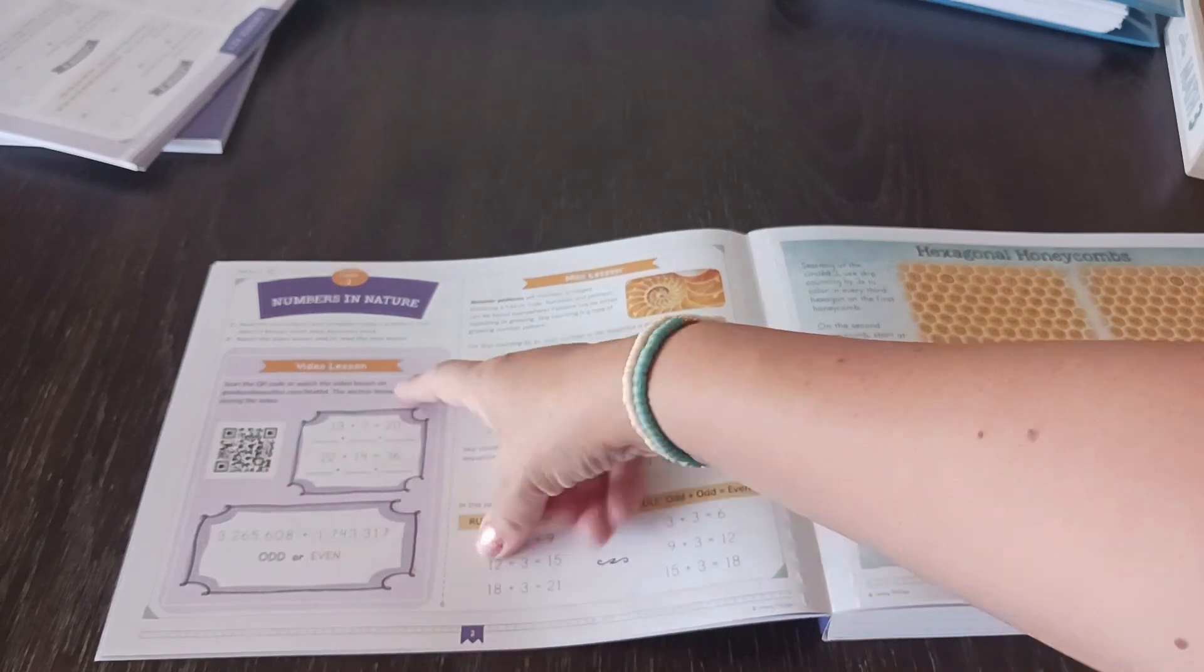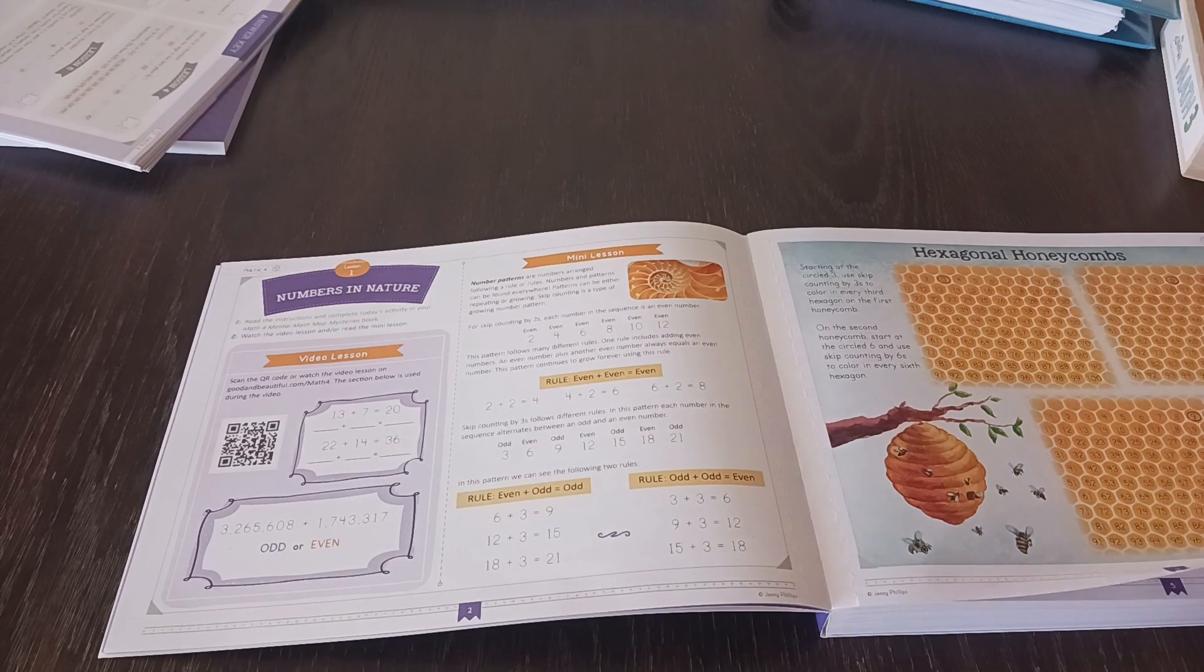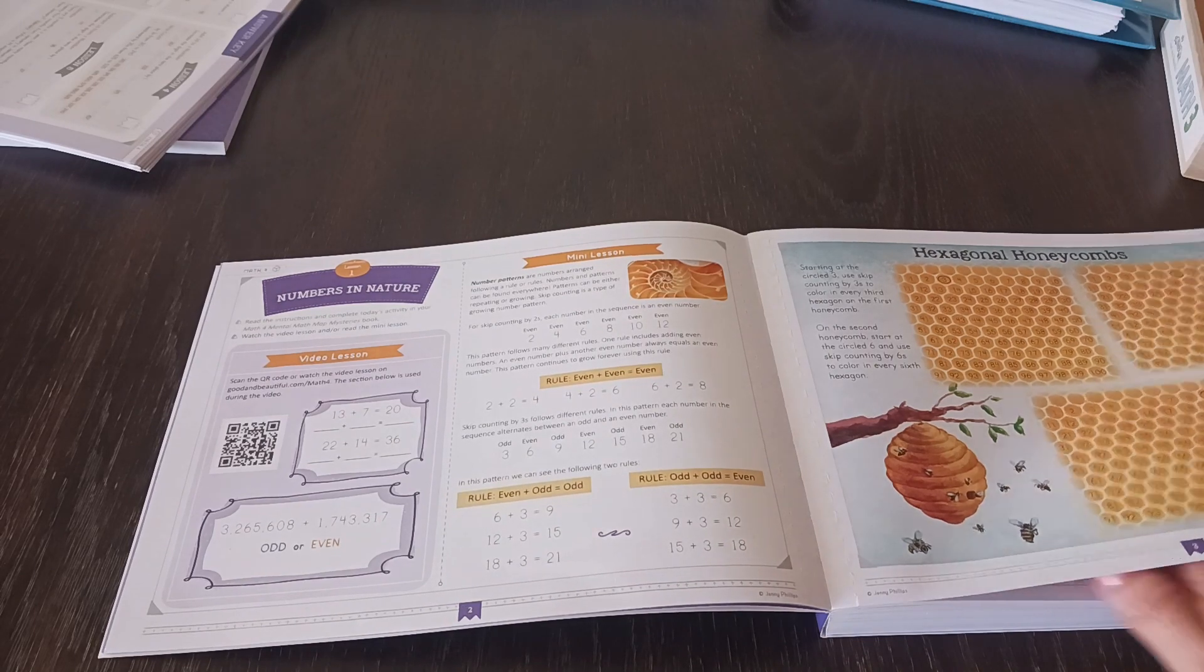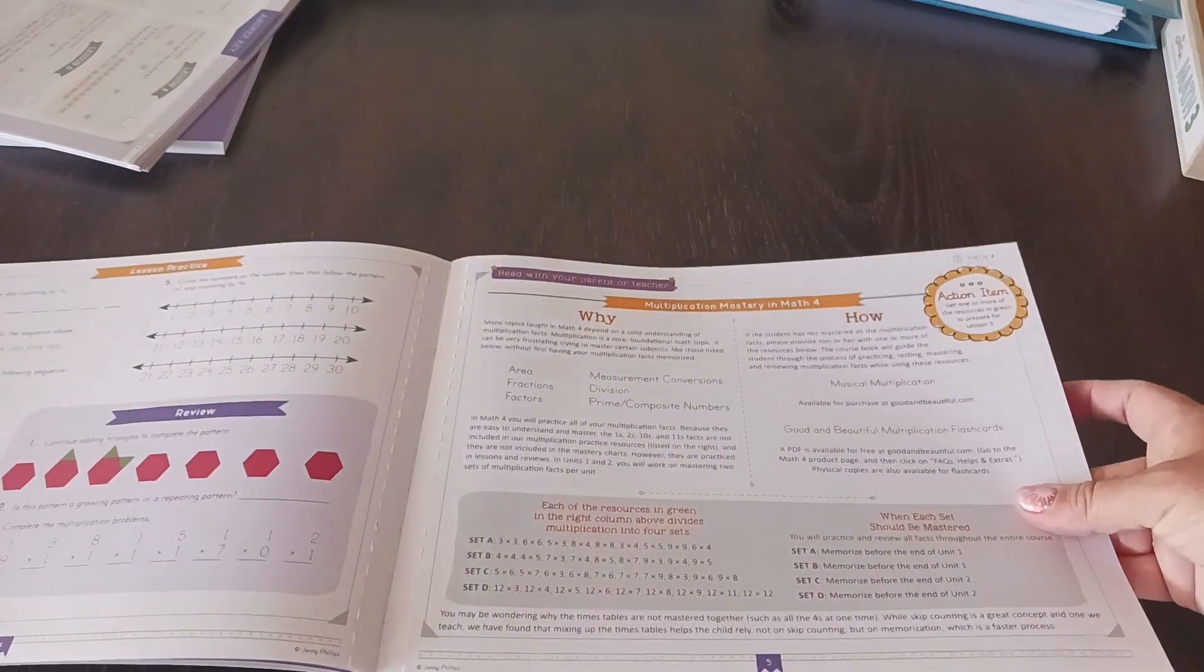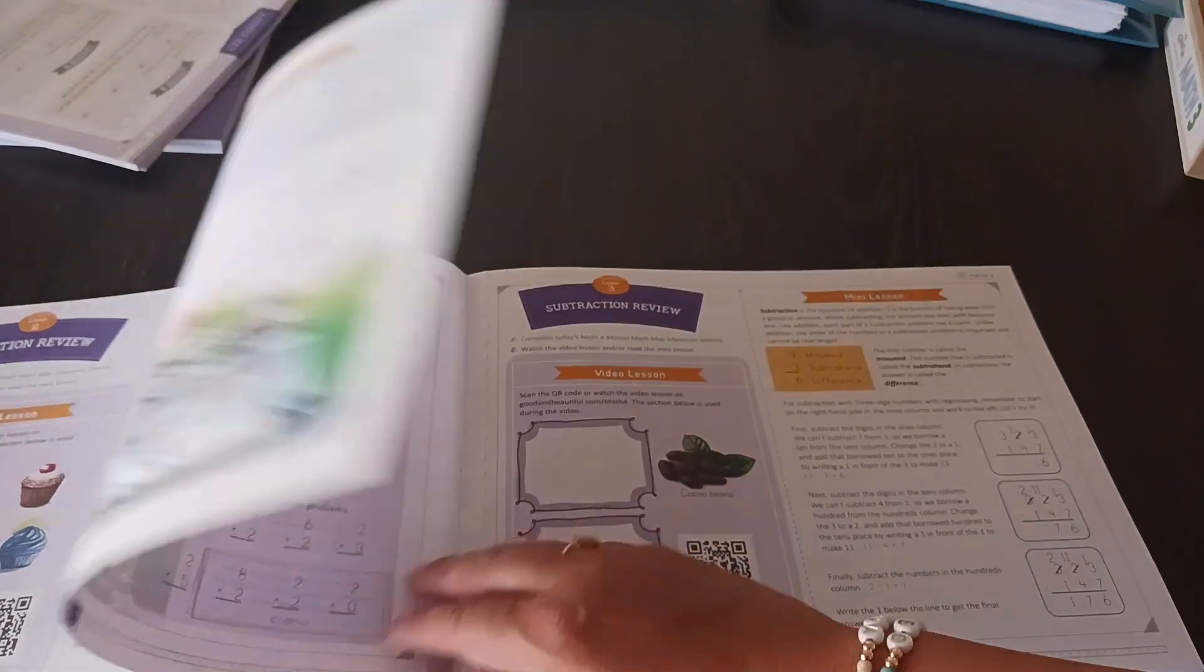So you're going to have these QR codes right here. So you'll scan it on your phone and there's actually video lessons. So I know Addy's excited to do some of the video lessons this year because they didn't have that in course three. So that'll be interesting for us to kind of use like the computer on stuff like that. But yeah, it's the same thing.